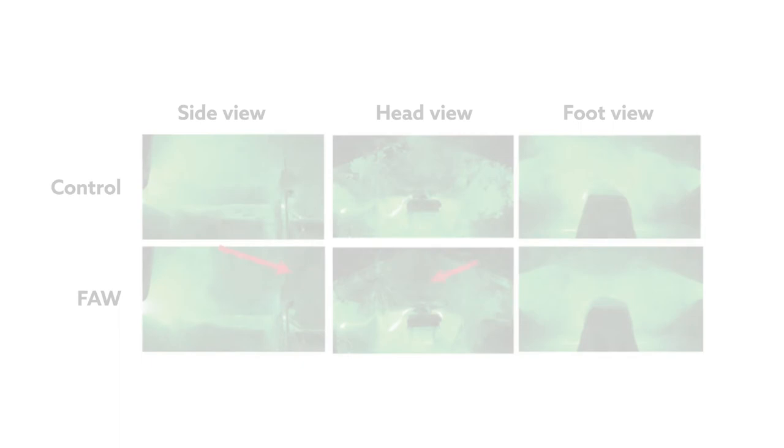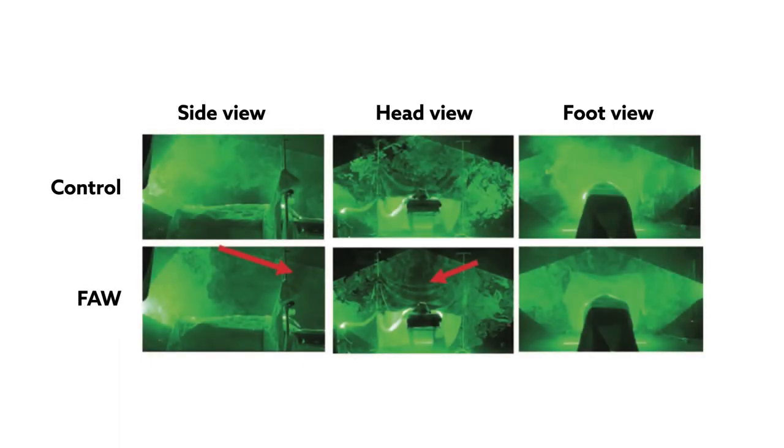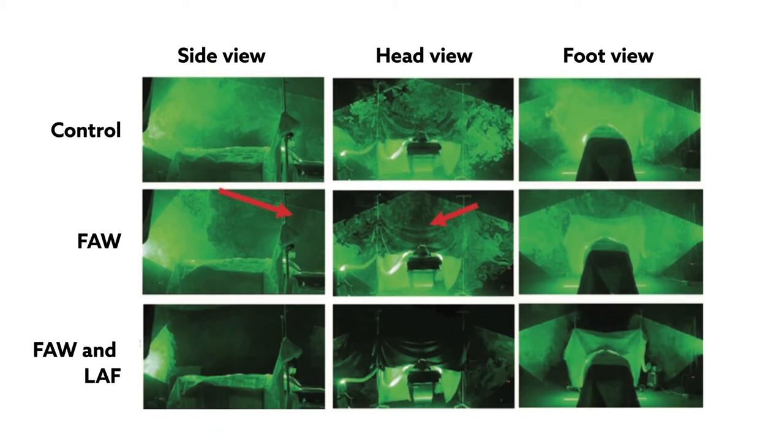The group also filled the room with smoke and used lasers to visualize air movement under different air flows. Again, in the absence of laminar flow, the forced air warming system caused air to recirculate over the mannequin's body. The stagnant air was cleared out, however, when the laminar flow was re-established.